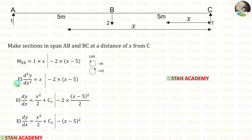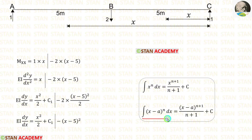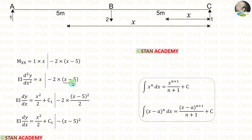Let us equate EI d²y/dx² to the moment. Let us make integration. The integration formulas are: integral of x^n dx equals x^(n+1)/(n+1) + C, and integral of (x−a)^n dx equals (x−a)^(n+1)/(n+1) + C. When we integrate x, we get x²/2. For x minus 5 with power 1 (n=1), n+1 equals 2, so we get (x−5)²/2. The 2s cancel, and finally we get this expression.